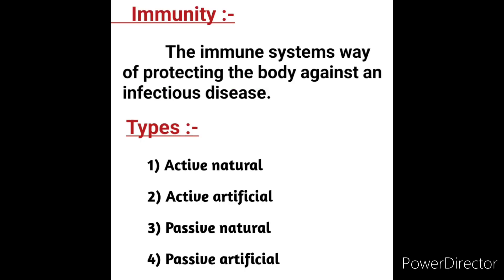Next we will see what is immunity and the types of immunity. Immunity is the immune system's way of protecting the body against an infectious disease. We have four types of immunity: active natural immunity, active artificial immunity, passive natural immunity, and passive artificial immunity.